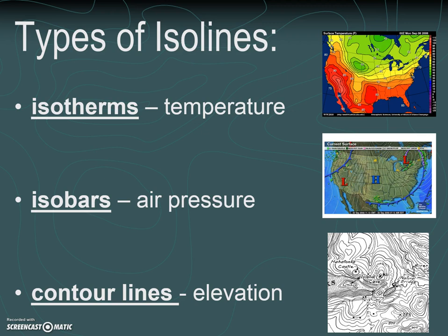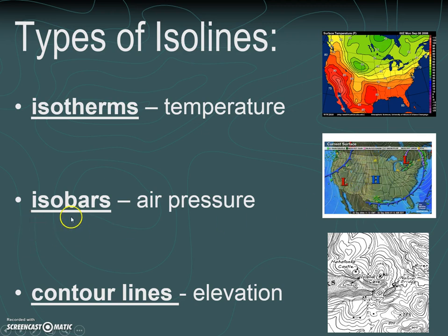There are three main types of iso lines that we're going to be using. The first type are called isotherms — these are lines that connect points of equal temperature. When looking at the map showing temperatures across the United States, those iso lines are called isotherms because they show temperature. When we're looking at air pressure, the iso lines are called isobars, because air pressure is also known as barometric pressure, and the unit we often use is millibars. When we're looking at elevation, we use what are called contour lines — they're just a type of iso line that shows points with the same elevation.